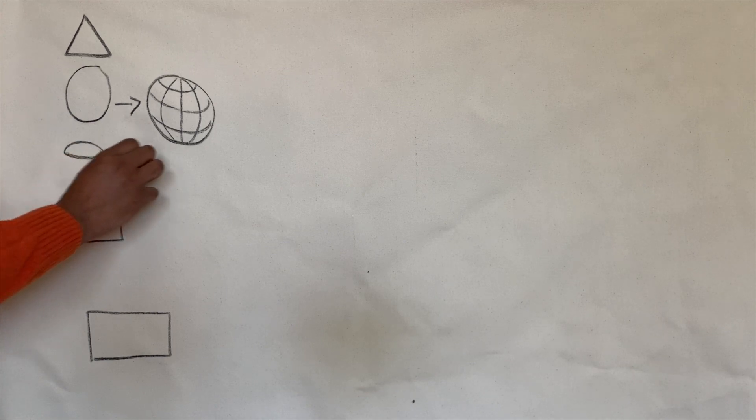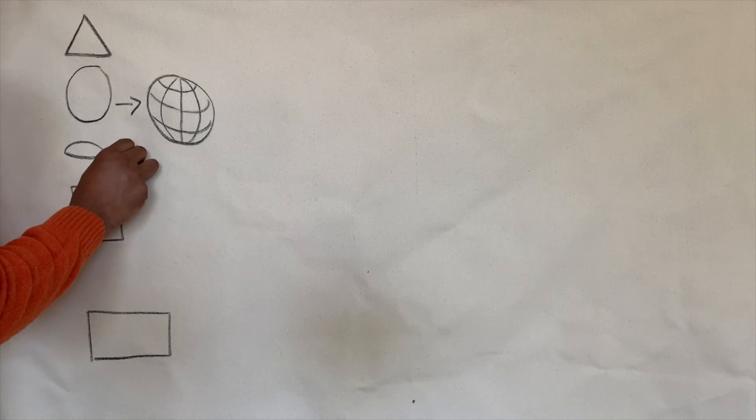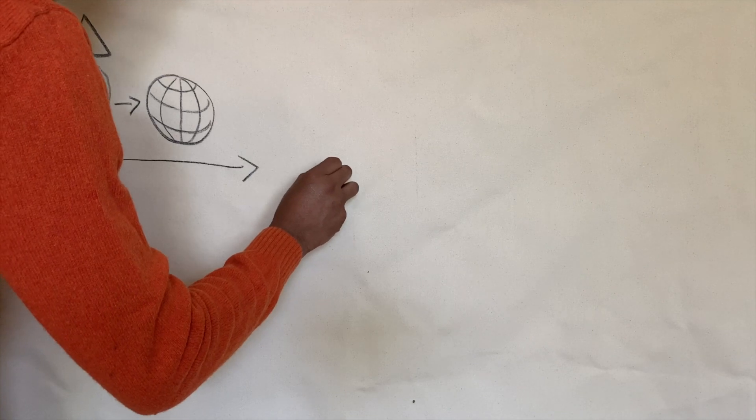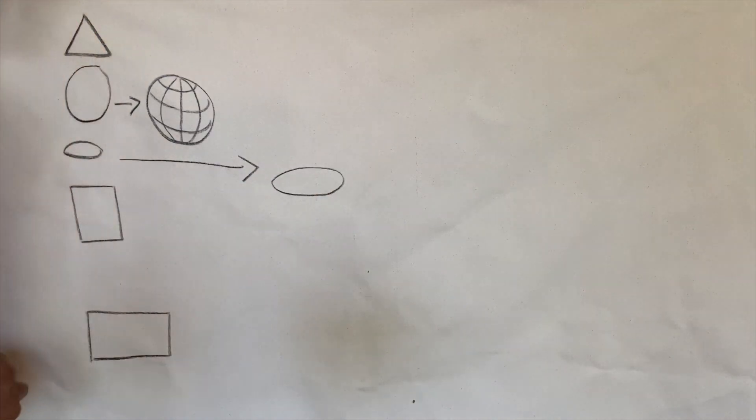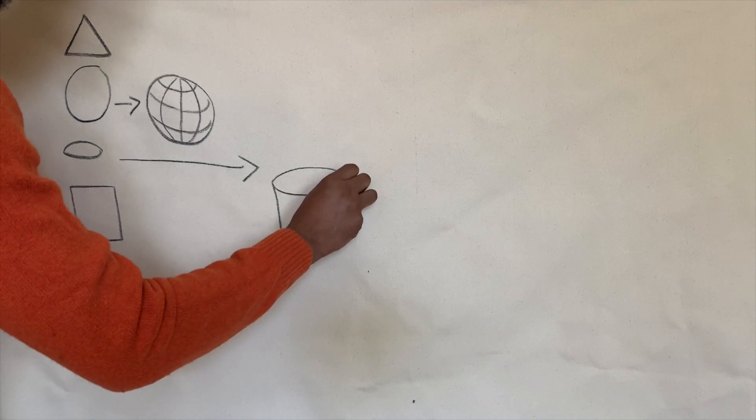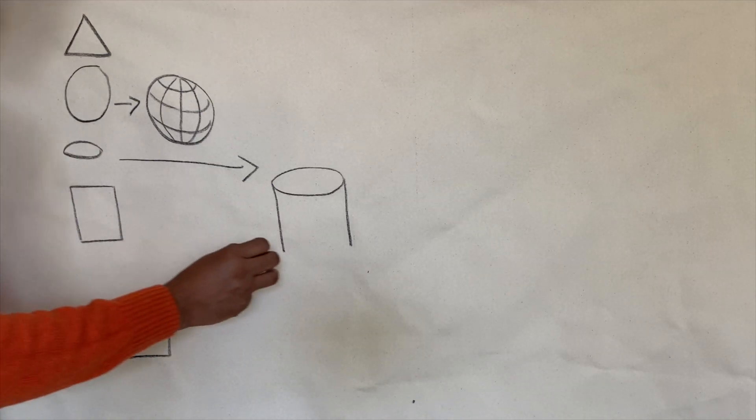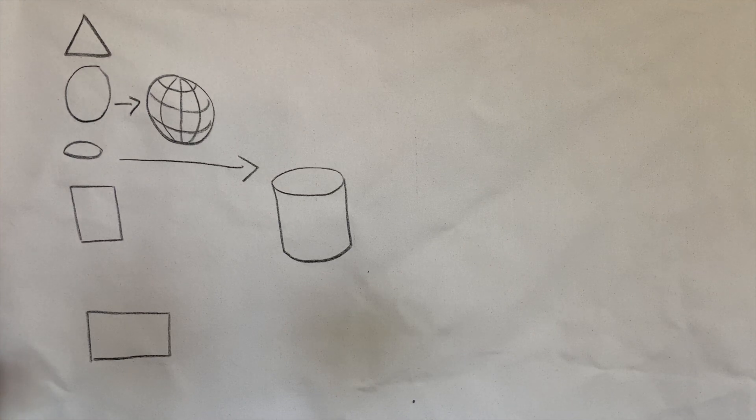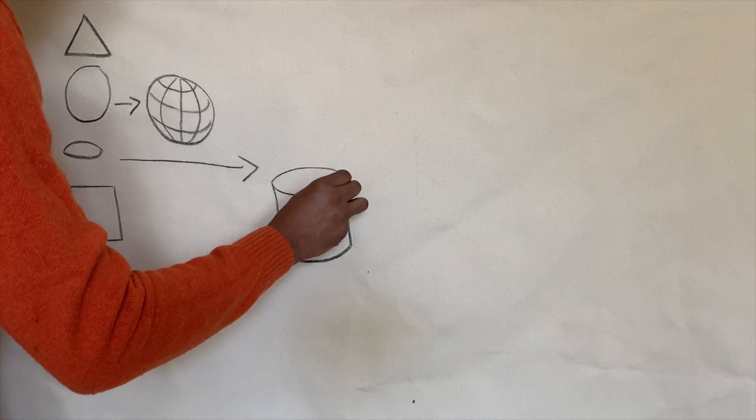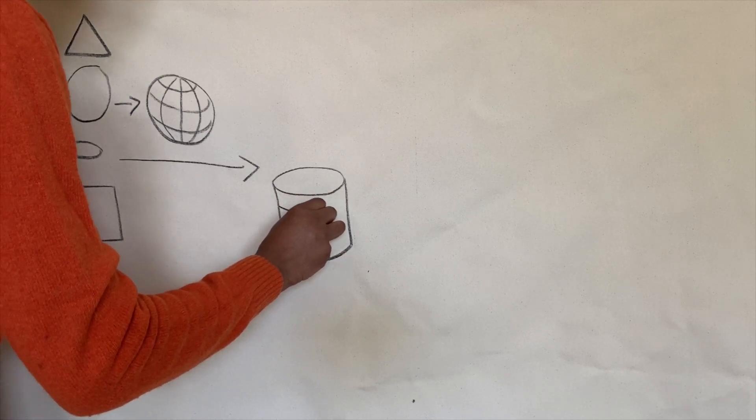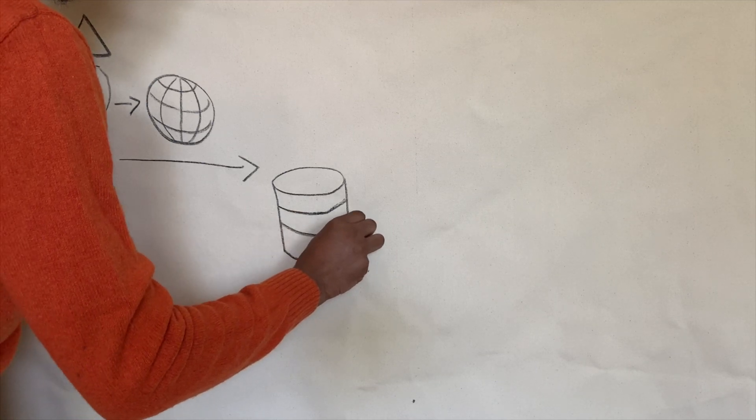Your oval. You can begin to make what they call a cylinder shape, which is you start with an oval at the top. You put your line going down. Then you curve it under at the bottom.